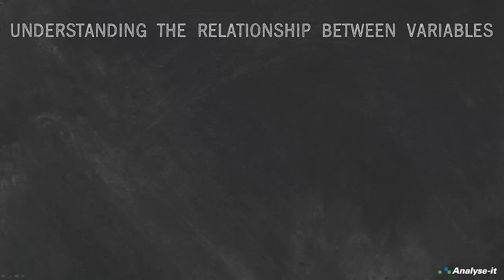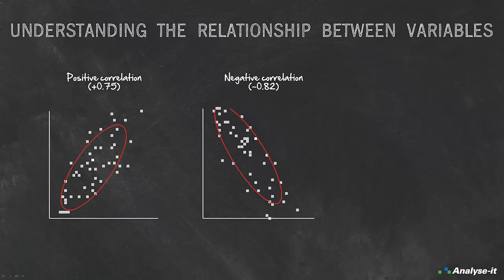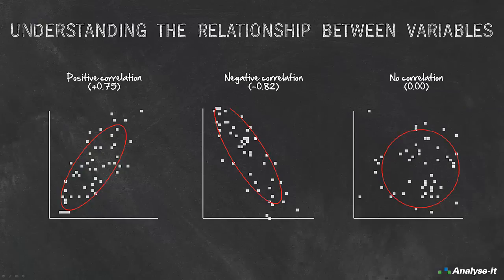Understanding the relationship between variables: when analyzing many variables, scatter plots and correlation coefficients can quickly uncover patterns and reduce a large amount of data to a subset of interesting relationships. Correlation describes the strength of a relationship between two variables. A correlation coefficient ranges from minus 1 to plus 1. Plus 1 indicates a perfect positive linear relationship, and minus 1 indicates a perfect negative linear relationship. 0 indicates the variables are uncorrelated and there is no linear relationship. Normally, the correlation coefficient lies somewhere between these values.